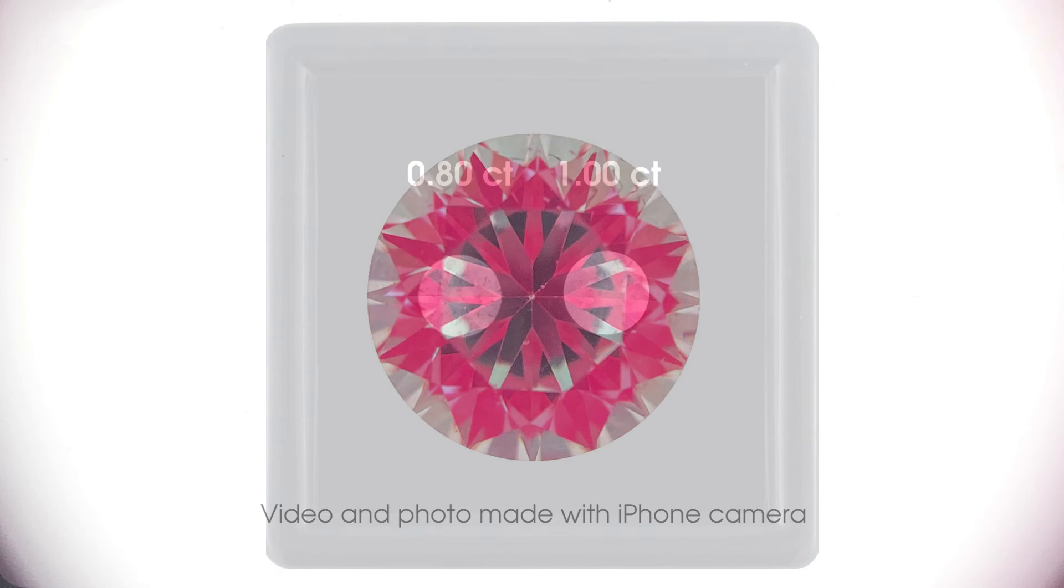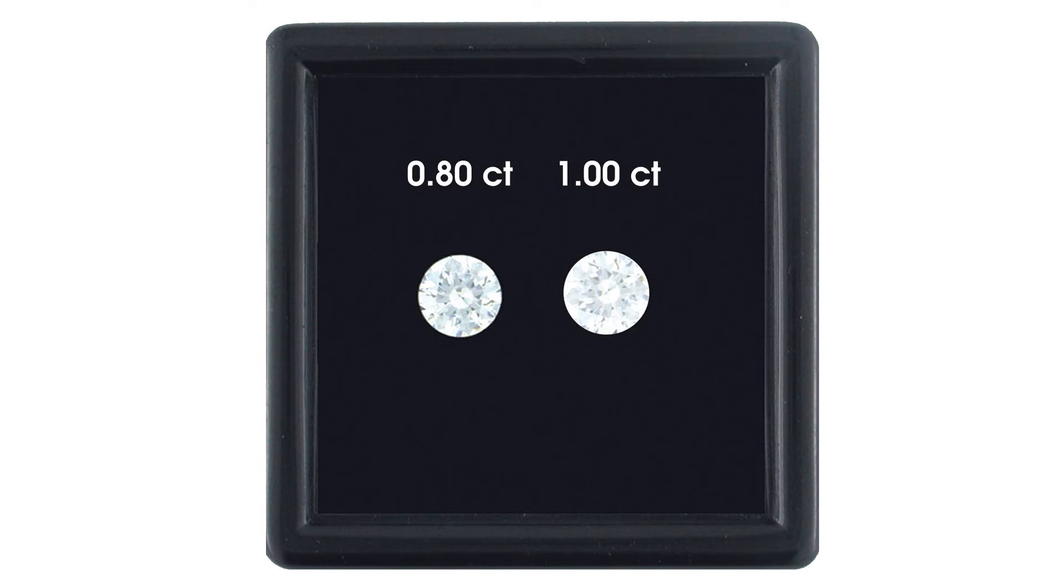In a jewelry store under spotlights, they both seem big and bright. But now let's see them in normal lighting. Here, the differences IdealScope reveals become apparent. The 1 carat stone loses brightness at the edges and now appears visually smaller than the 80 pointer, even though it's physically larger.